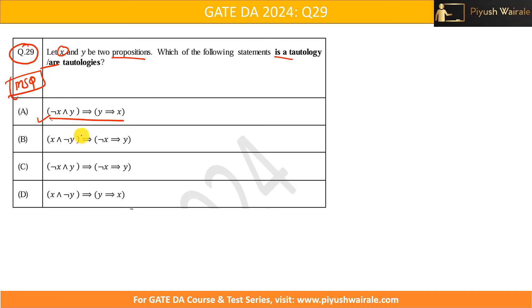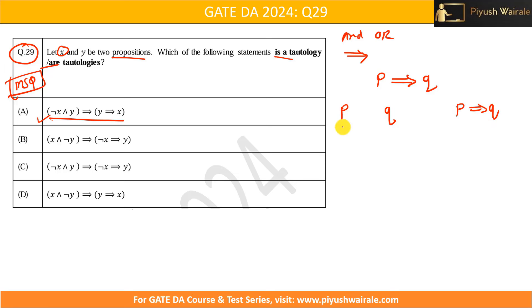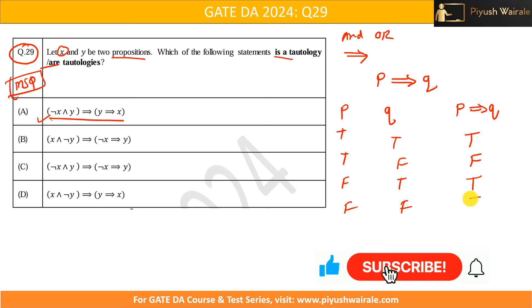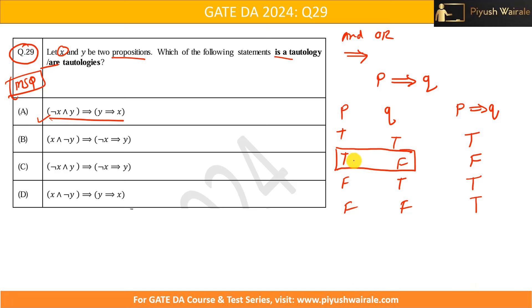You should know the truth table for AND, OR, and implication. For p implies q: true→true = true, true→false = false, false→true = true, false→false = true. There is only one condition that makes implication false: when the left-hand side is true and the right-hand side is false.